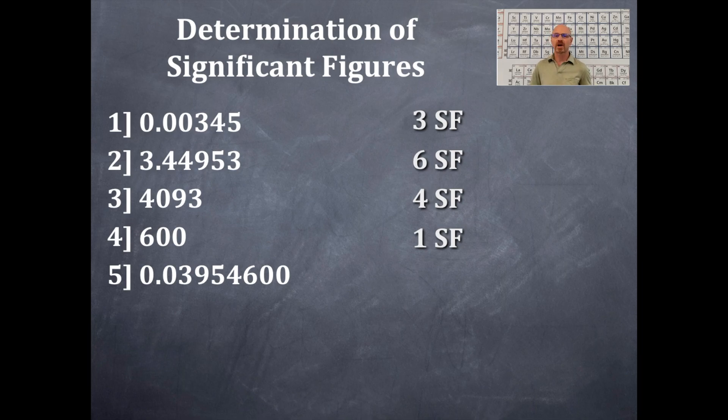And the two zeros that are to the right of the 6, they count because there is a decimal in the number. And those two zeros are trailing a non-zero integer that is the 6. So if you count those numbers up, the non-zero integers and the two zeros at the post of the 6, that counts. That's seven significant figures.